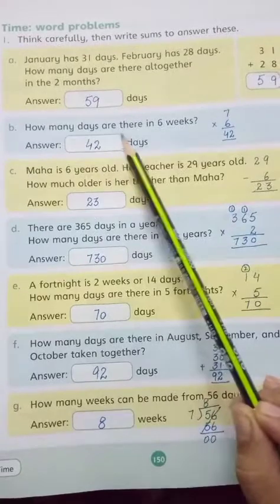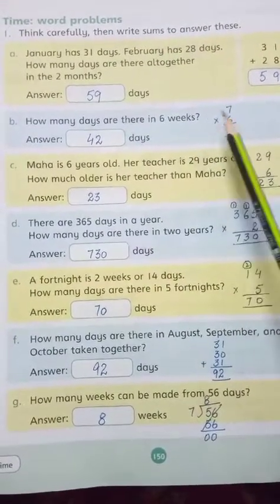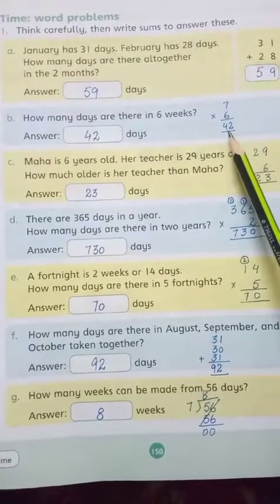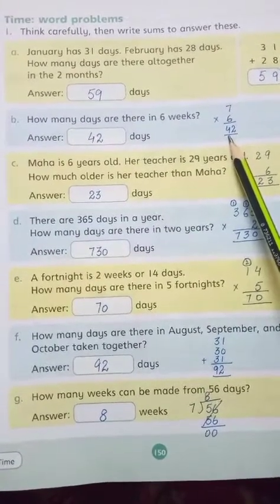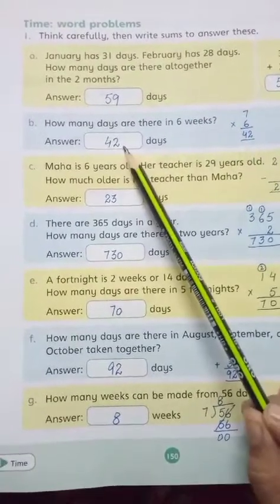Problem B: How many days are there in 6 weeks? Now in 6 weeks how many days are there? We will multiply 6. When we have 7 times 6, the answer is 42.